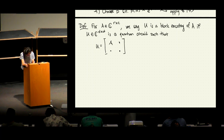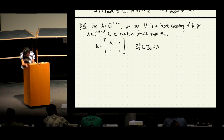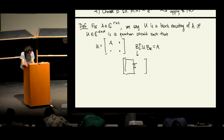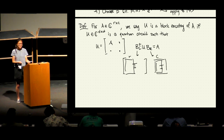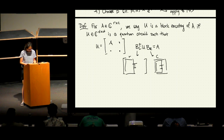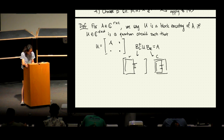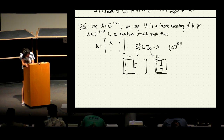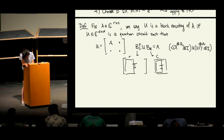Another way to write this is B_L† U B_R = A, where B_R is the identity considering only the first R columns and B_L considers the first C columns. I'll assume everything is powers of two so we can write things in terms of qubits, and then you can index into your unitary U in this way to recover A.